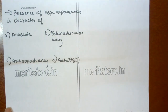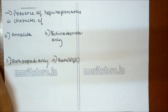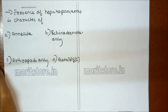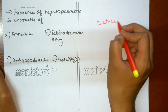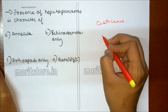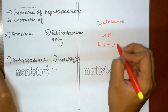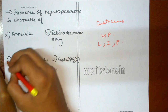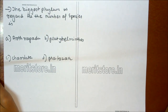Presence of hepatopancreas is a character of: A Annelida, B Echinodermata only, C Arthropods only, D both A and C. The digestive gland of crustaceans — that is, arthropods — is the hepatopancreas, which combines the functions of liver, intestine, and pancreas. So option C is the correct answer.